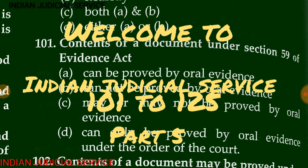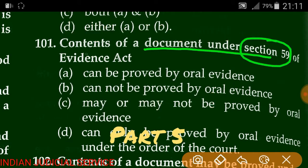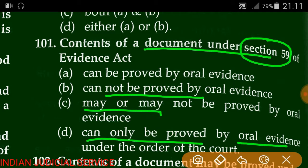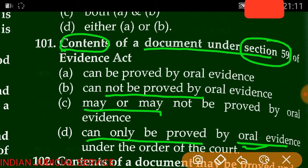Question number 101: The content of a document under Section 59 of the Evidence Act can be proved by oral evidence? According to Section 59, all facts except the content of a document or electronic record may be proved by oral evidence. So the answer is B — content of a document and electronic record cannot be proved by oral evidence.